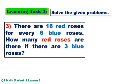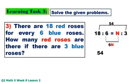Number 3: There are 18 red roses for every 6 blue roses. How many red roses are there if there are 3 blue roses? The first ratio is 18 to 6 equals N to 3. 18 times 3 equals 54, 6 times N equals 6N. 54 divided by 6 equals 9. 9 red roses.